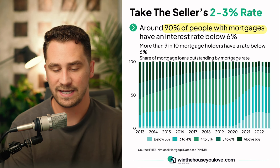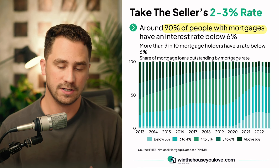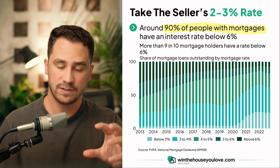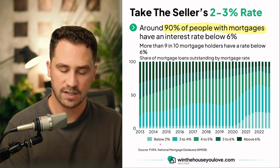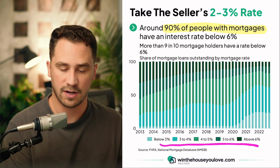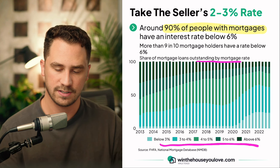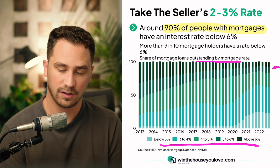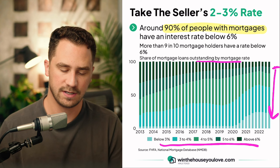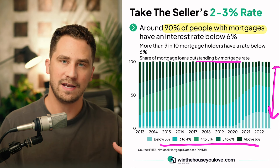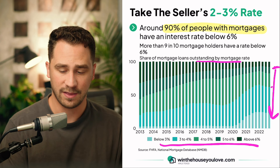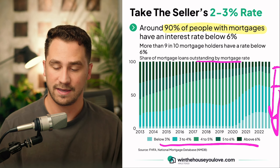Right now around 90% of mortgages have an interest rate below 6%. If we take a look at this chart, it shows the different interest rates that people have as a percentage of outstanding mortgages. We can see 90% of people have less than a 6% interest rate, so of course it'd be great if you could take over that lower rate, especially if somebody has a rate in the 4% and lower category.